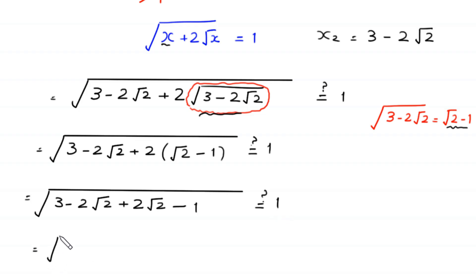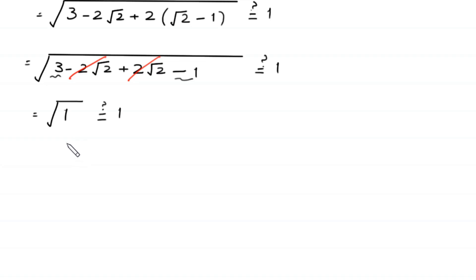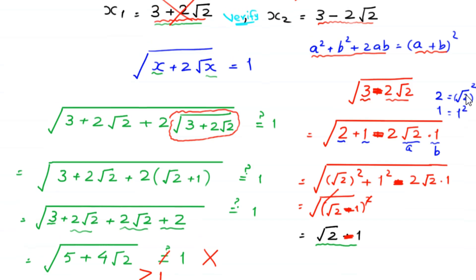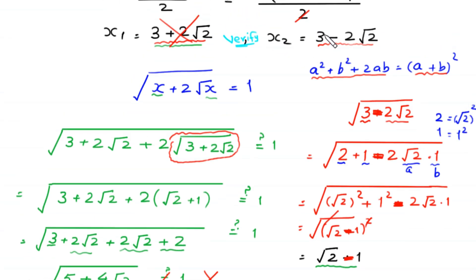The negative 2√2 terms cancel with the positive 2√2 terms, leaving square root of (3 minus 1), which is square root of 1, equals 1. This equals 1, so the condition is satisfied. Therefore x₂ equals 3 minus 2√2 is the valid solution.